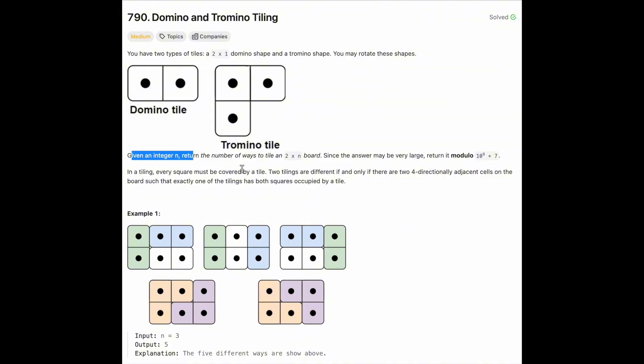And we will be given an integer n and then we want to return the number of ways that we can tile a 2 by n board, which means it will be two rows and n columns. And since the answer can be very large, we need to return the modulo 10 to the ninth plus seven.